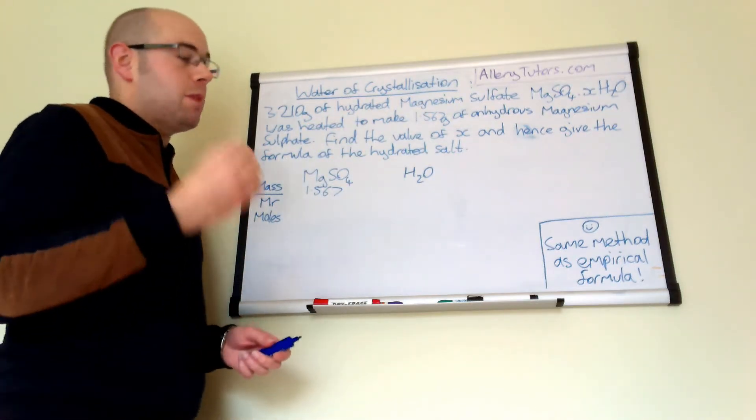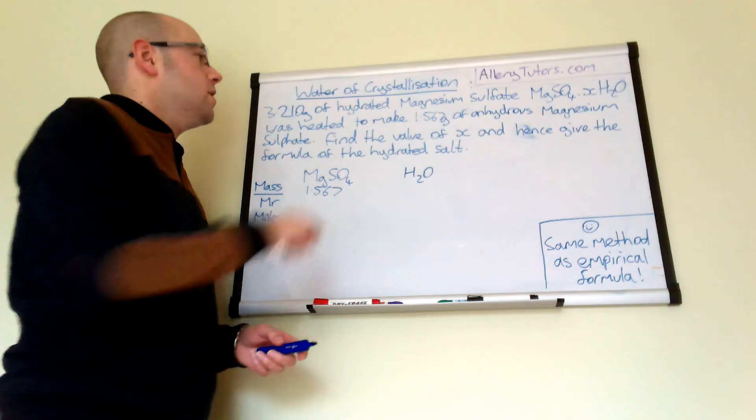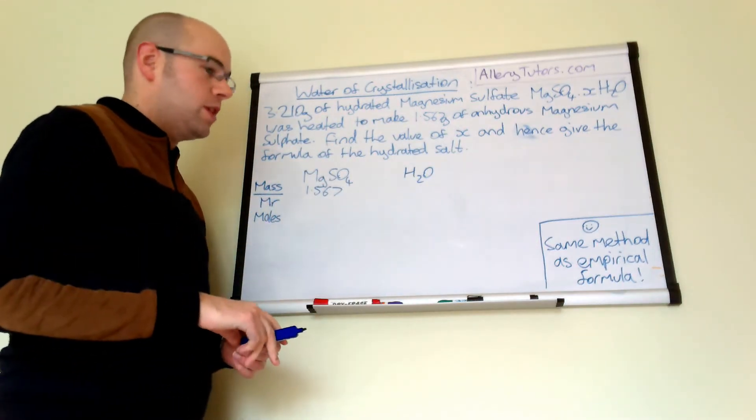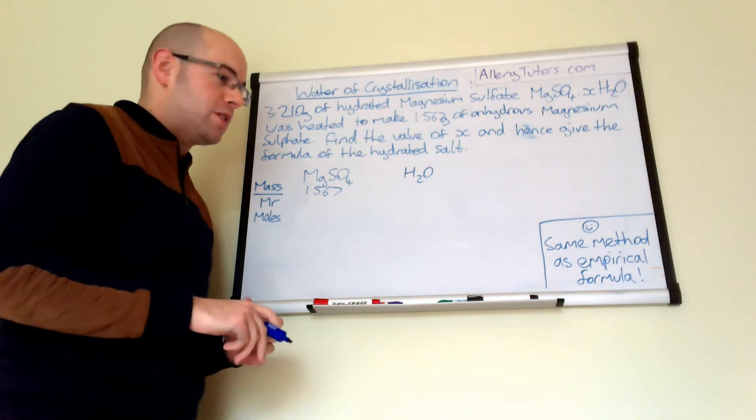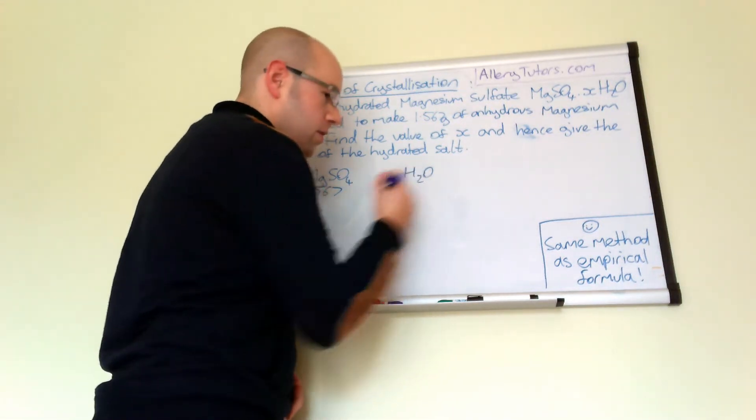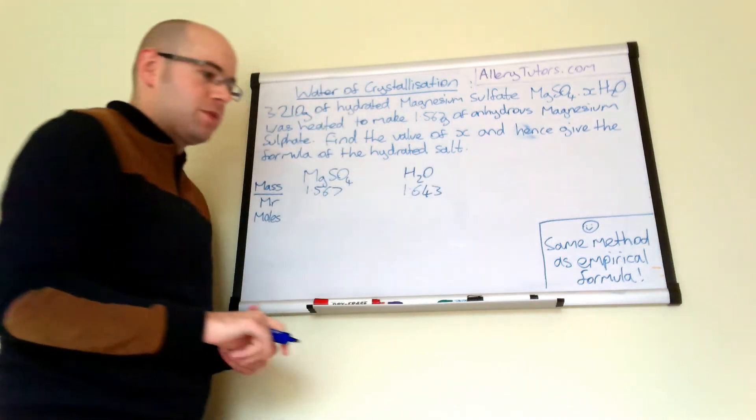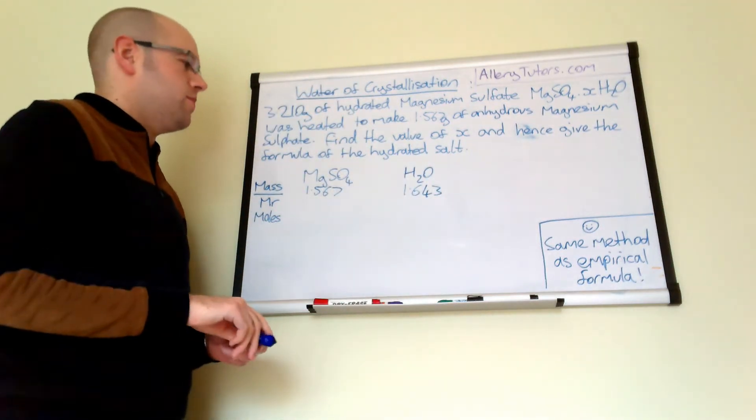And we can work it out by taking the mass of the hydrated magnesium sulfate. This is the magnesium sulfate with the water and subtract it away from the mass of the anhydrous. And then from that we should be able to work out the mass of water. And the mass of water comes out at 1.643 grams. So that's really straightforward to work out.